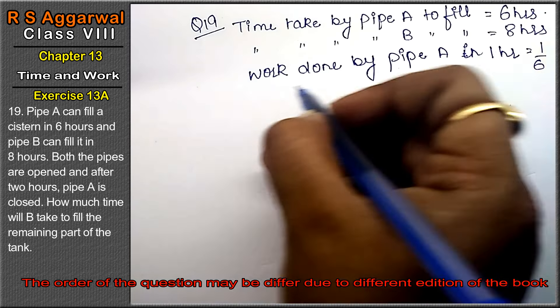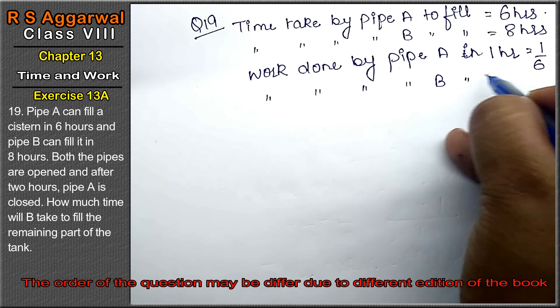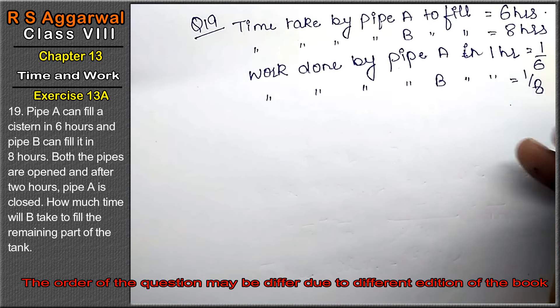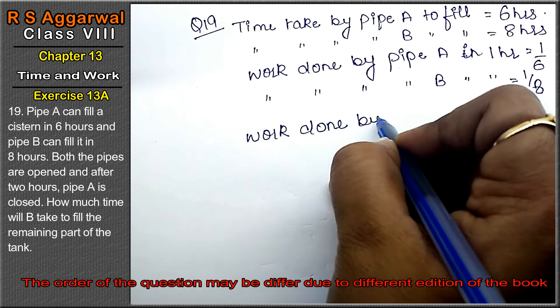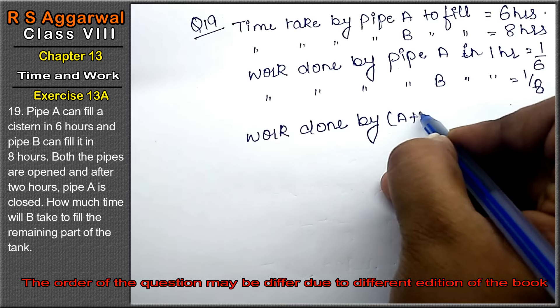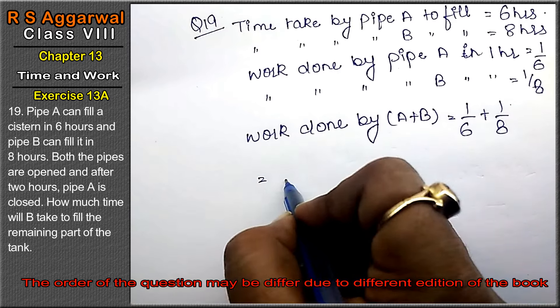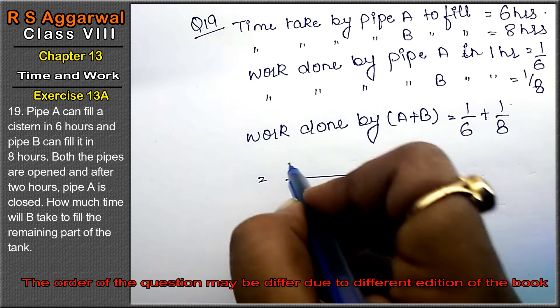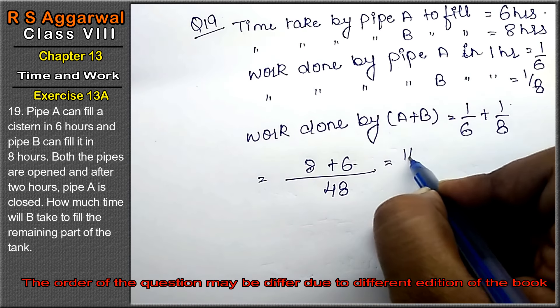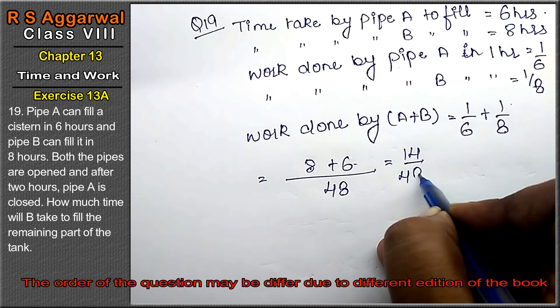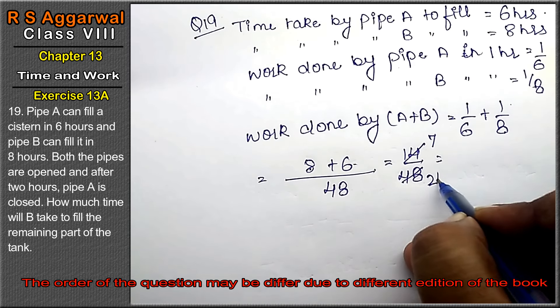In one hour equals 1 upon 6. And work done by pipe B in one hour equals 1 upon 8. If both work together, then work done by A plus B will be 1 upon 6 plus 1 upon 8. Taking LCM of 48, 8 plus 6, that is 14 upon 48. Or we can say 2 sevens are 14, 2 fours are 8, so 7 upon 24, right friends?